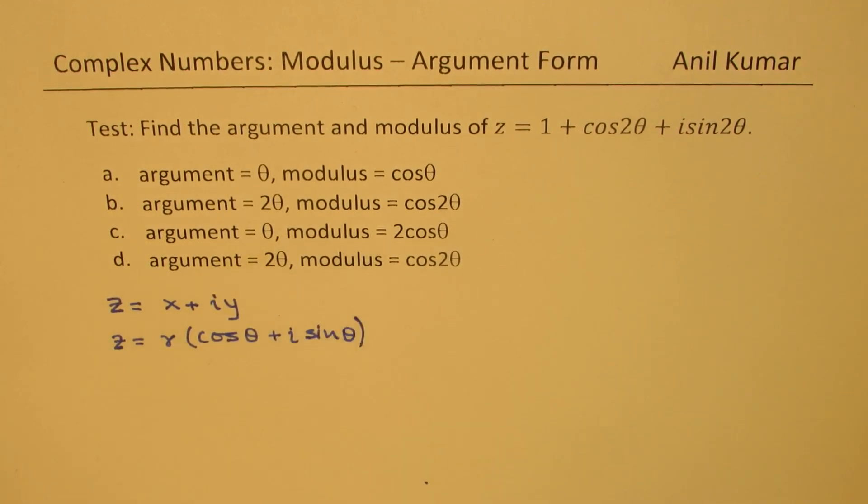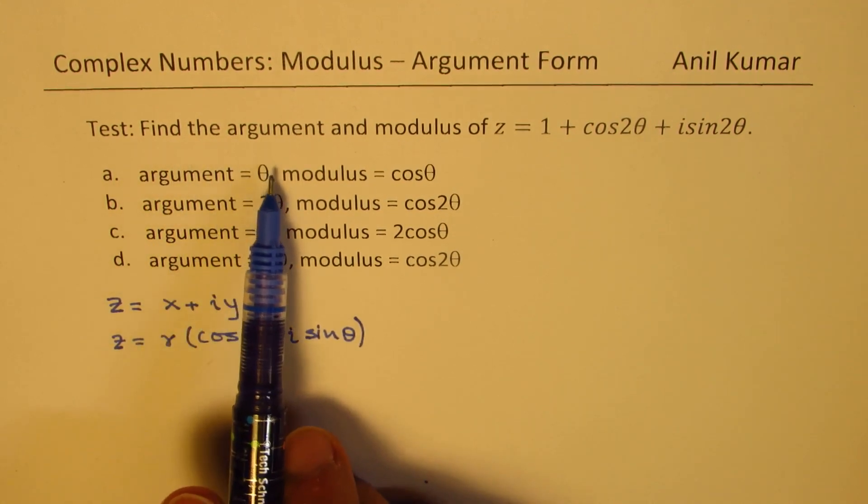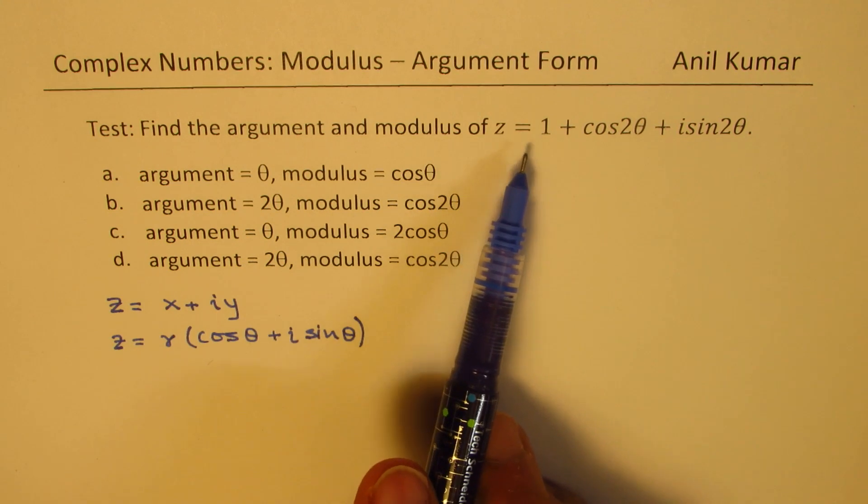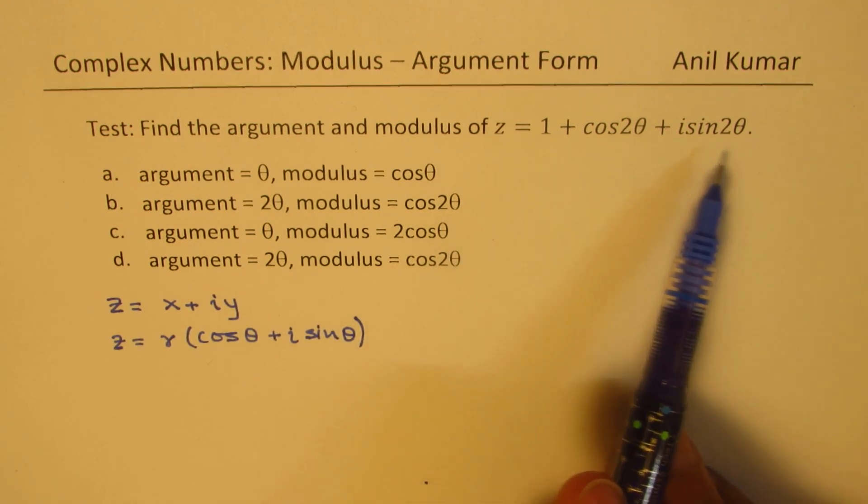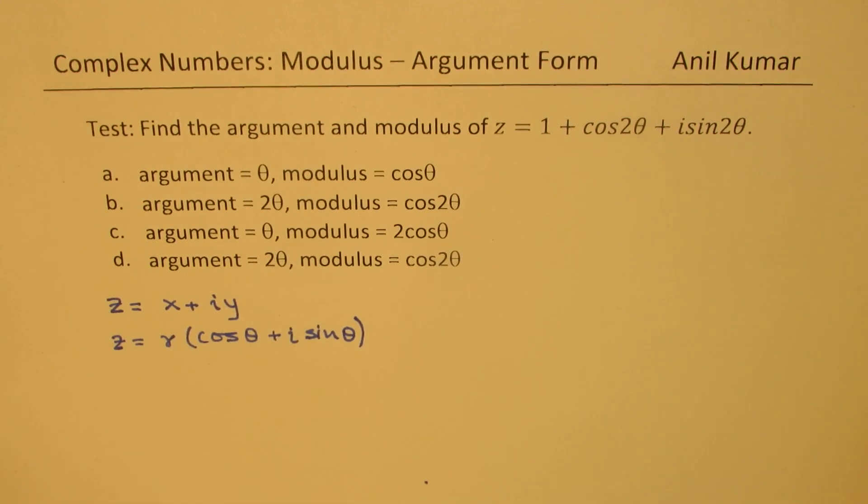Based on this, here we have a multiple choice question. Find the argument and the modulus of z equals to 1 plus cos 2 theta plus i sine 2 theta. Four choices are given to you. You can always pause the video, copy the question, answer and then look into my suggestions.